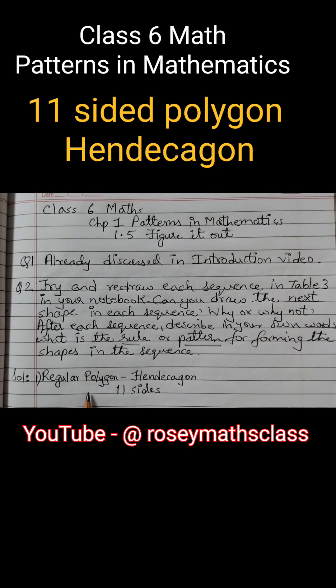The first sequence is of regular polygons. It started with a triangle that is 3 sides till decagon 10 sides. So the next one will be 11 sides and that's called hendecagon. The other names are undecagon or endecagon.